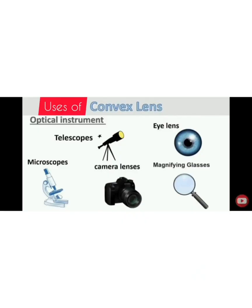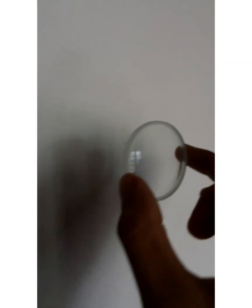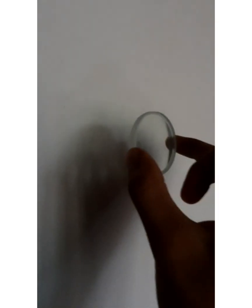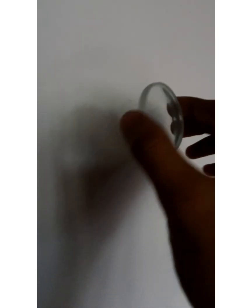In the case of the concave lens, it does not project any image on the screen. It produces virtual images, which cannot be seen on a screen.